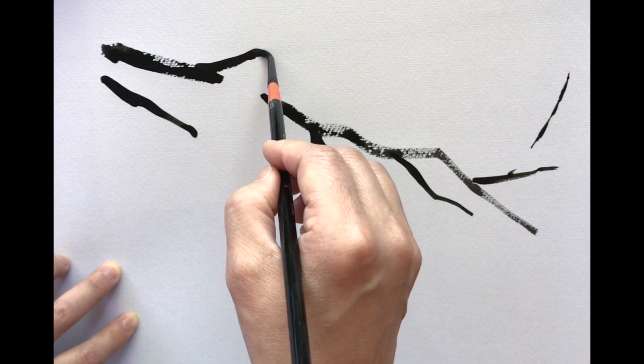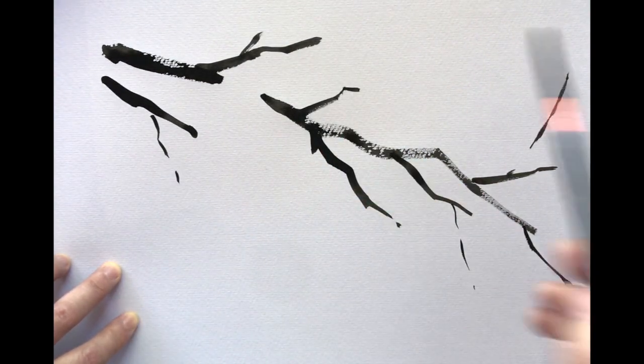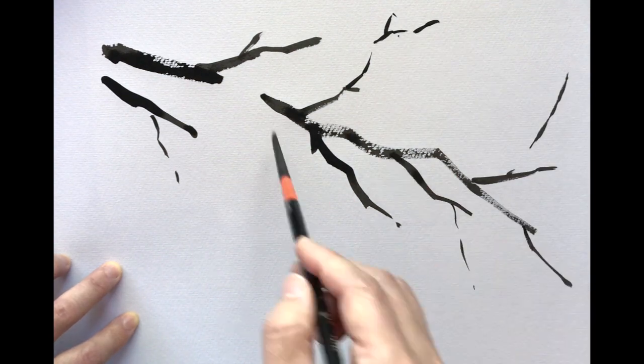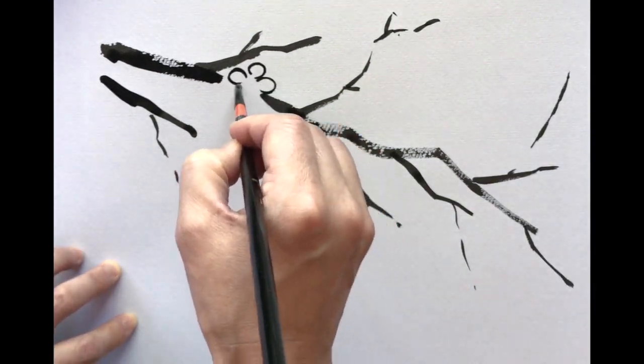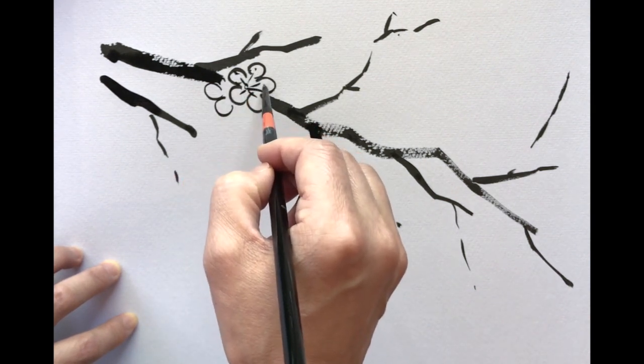This one isn't going upwards or horizontally, it's going a bit down. And now, once you're done branching out, practice drawing the flowers on it. Doesn't it look really nice?